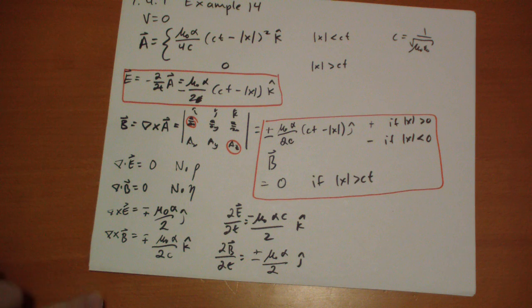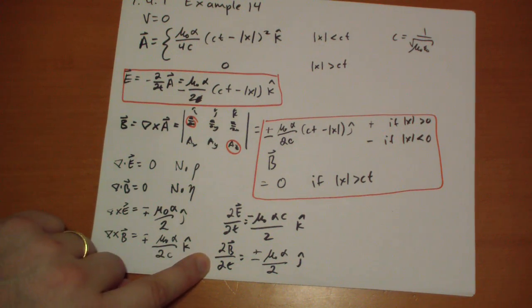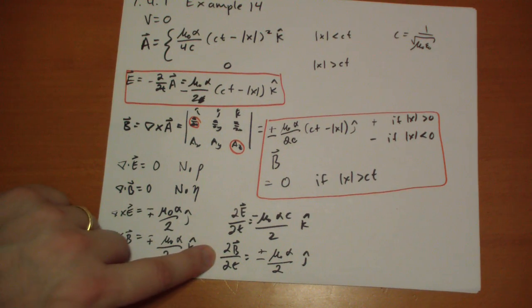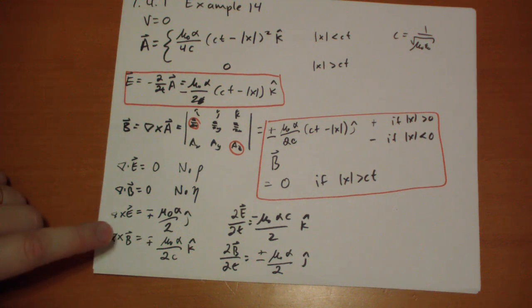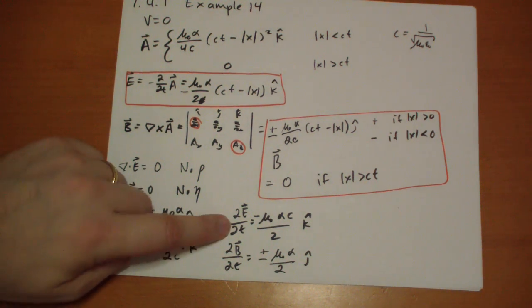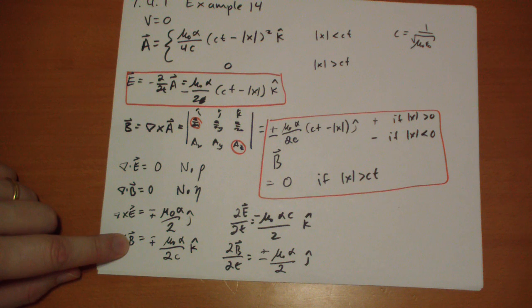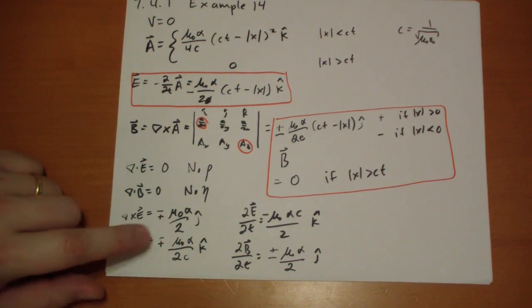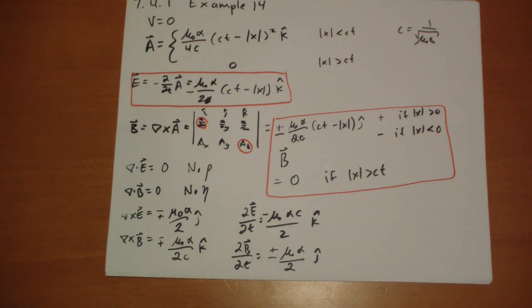You'll note that the curl of E is negative the change in B over time. The curl of B is supposed to be the change in E over time plus the current, the volume current. And so these two don't match, so we actually have the term for the volume current. Now if we look at what we get, if we graph out the graphs.